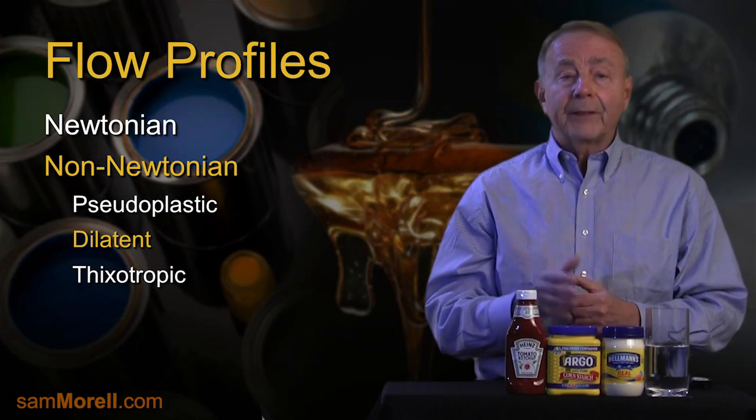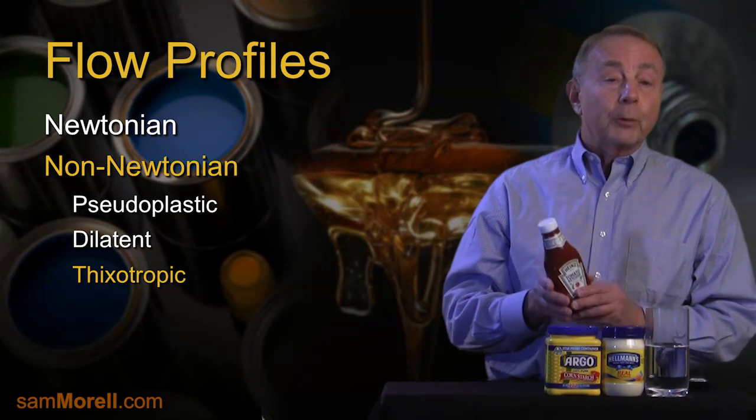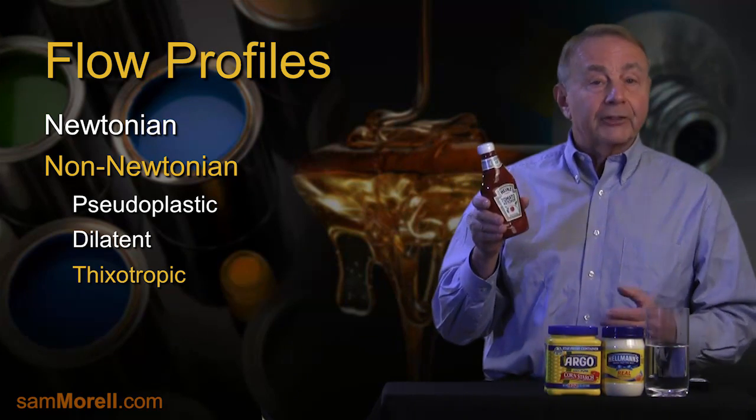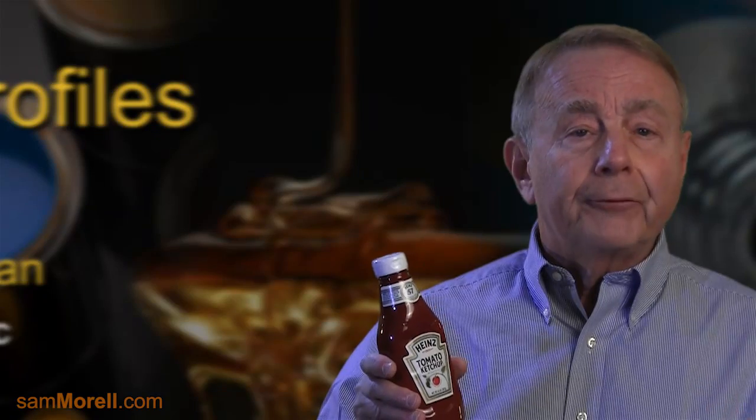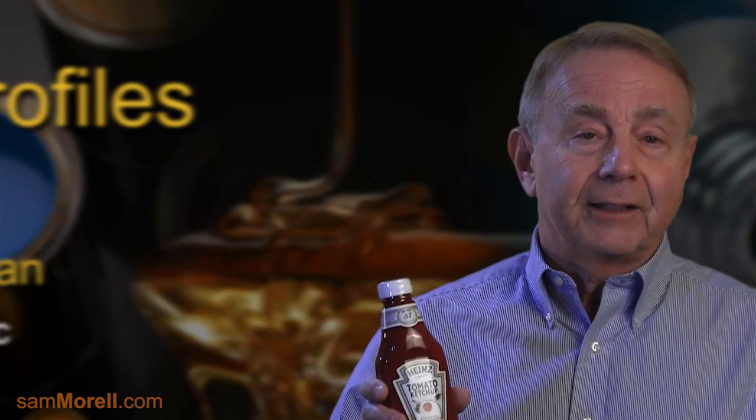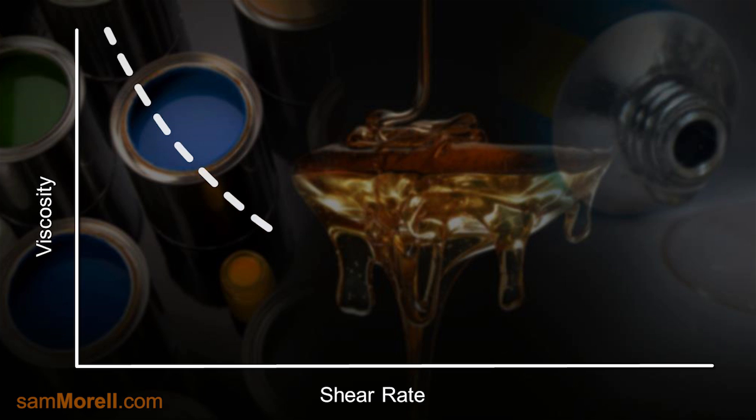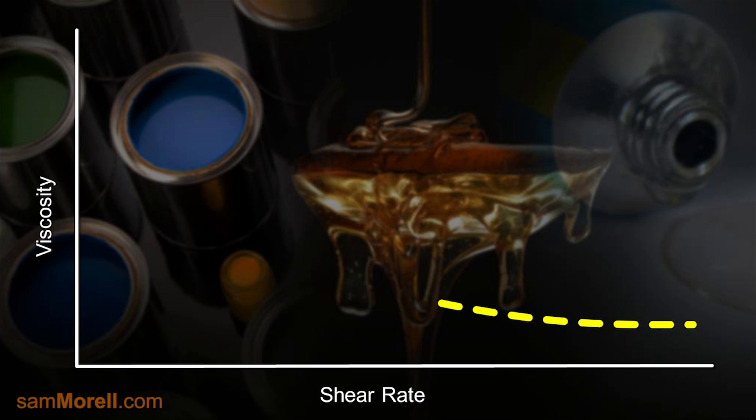The last rheological profile we'll examine is thixotropy. Thixotropic fluids are similar to other shear dependent materials like pseudoplastics, but with one added variable — they are time dependent as well. Therefore, the viscosity is affected by both shear rate and the time it takes to recover. Ketchup is a good example of this flow behavior. You shake the bottle vigorously to pour the ketchup, but you only have a short time to deliver this condiment onto your food before it reaches its at-rest high viscosity. Recall that pseudoplastic materials will decrease in viscosity with increasing shear rate and recover along the same path when the force is removed.